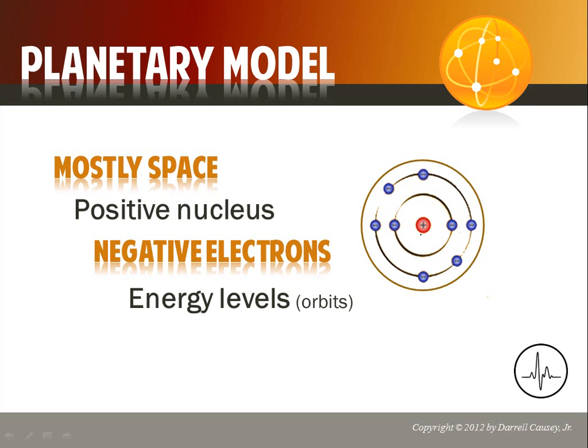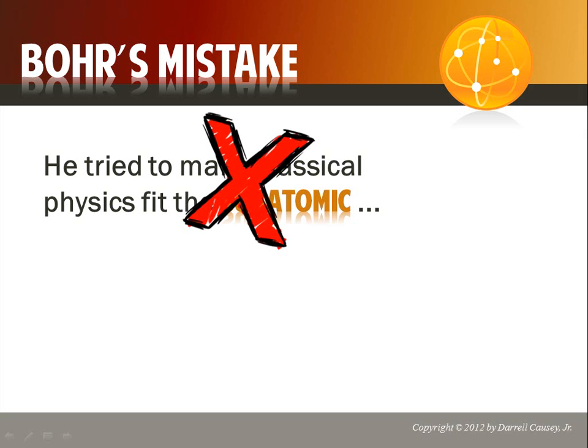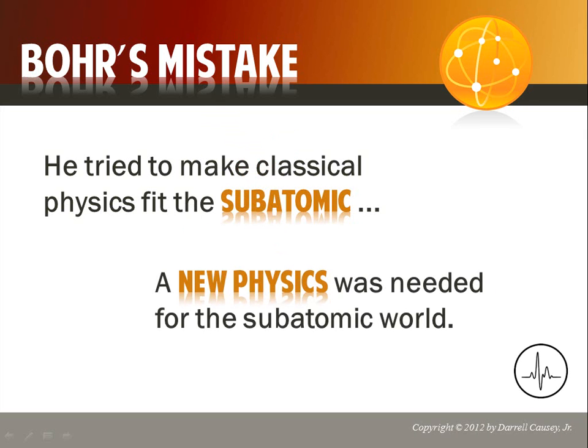Be sure you understand the planetary model. But Bohr's mistake — or what I call Bohr's conundrum — is that he tried to make classical physics fit the subatomic world, and it just wasn't working. What was needed was a new physics. The rules for the subatomic world were going to be different than the rules for the macro world. Newtonian physics is great for kinematics and the macro world, but it did not fit the subatomic world.